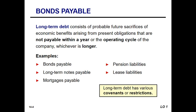Many banks use covenants in their loan agreements, very similar to those found in bond issues. Affirmative covenants are actions the firm agrees to take during the term of the loan — things such as providing financial statements, cash budgets, and carrying insurance on specific assets. For example, when you have a car loan and are required to carry full coverage insurance, that is actually a loan covenant. There may also be requirements regarding minimum levels of net working capital.